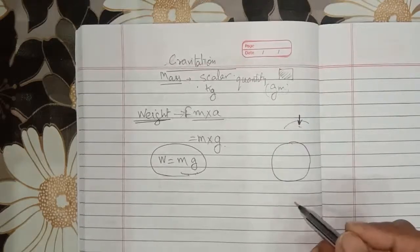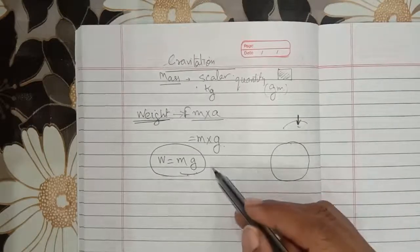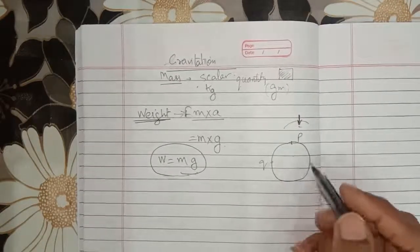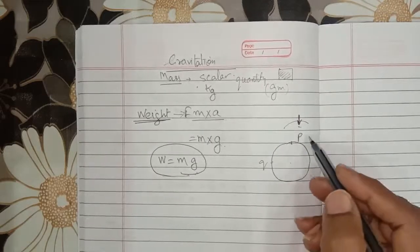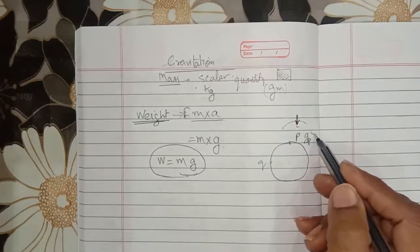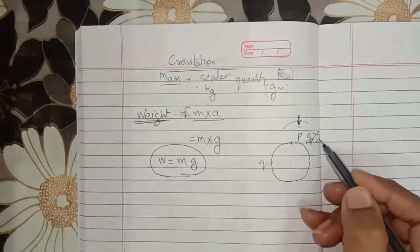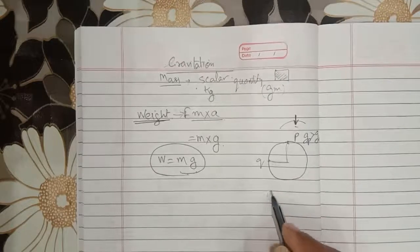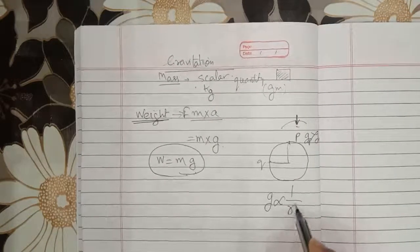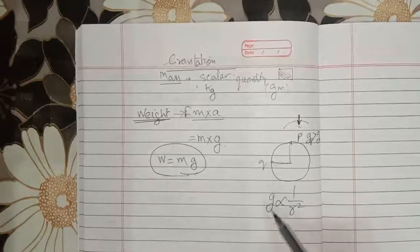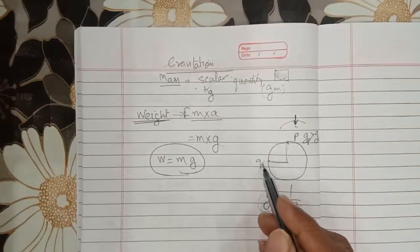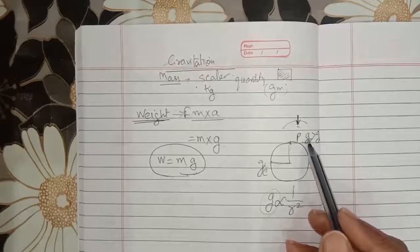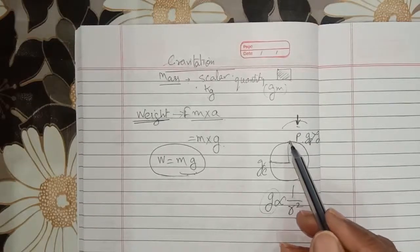We know that g changes from place to place. At the pole, the radius is smaller, so the acceleration due to gravity is greater than at the equator. Since the equatorial radius is greater, and g is inversely proportional to the square of Earth's radius, the value of g at the equator is less than at the pole. Therefore, the same object will have a larger weight at the pole and less weight at the equator.